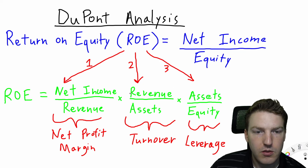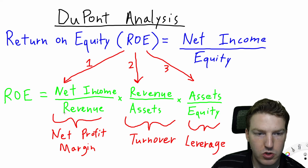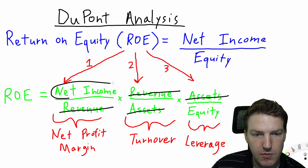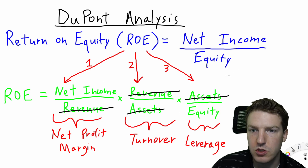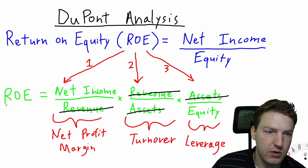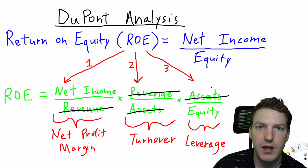One thing you'll notice about this formula is that in each denominator there's a matching numerator, so we can cancel out the revenue here with the revenue there, and cancel out the assets here with the assets there. We then end up with the same formula — net income divided by equity — that we started with. So the DuPont analysis just breaks ROE into three separate components, but it comes out with the exact same calculation as the original return on equity calculation.